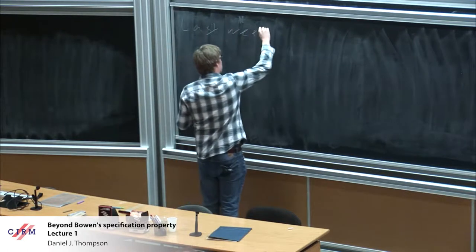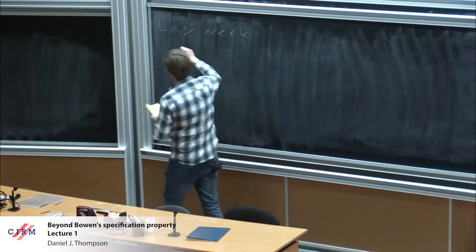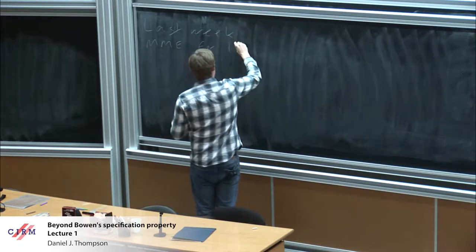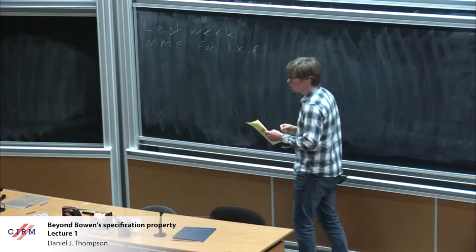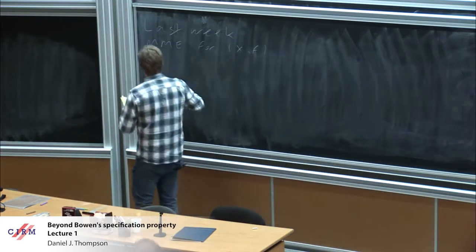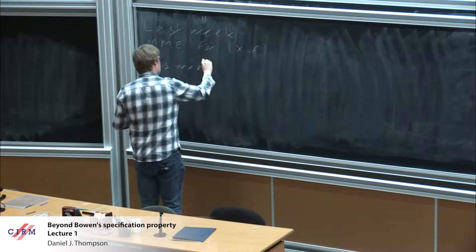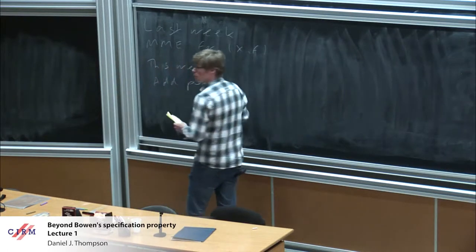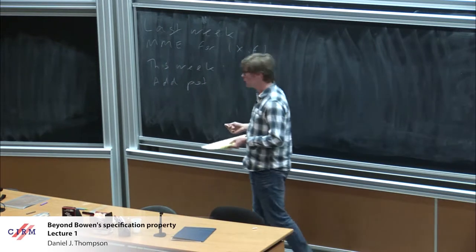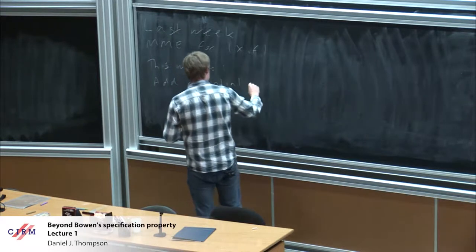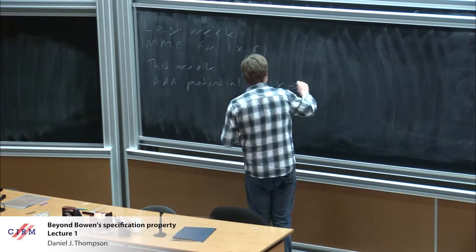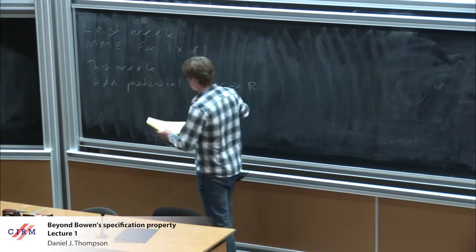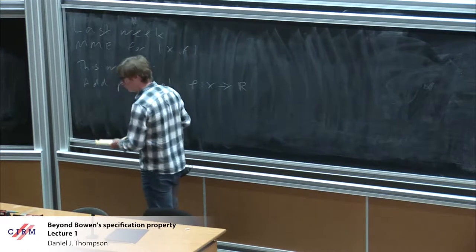Last week in our series of lectures about beyond the Bowen specification property, the focus was entirely on measures of maximal entropy, and Vaughan mainly stayed in the discrete time setting. This week we're going to talk about equilibrium states. While entropy measures complexity of the orbit structure of the system, the generalization is to add a weight on the space and then you have a weighted theory of complexity. Equilibrium states are the generalization of this.